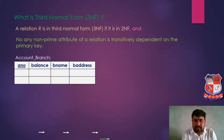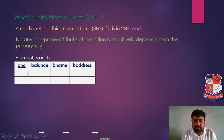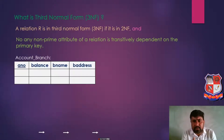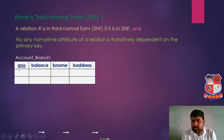हमारे पास suppose एक relation है account_branch, और यहाँ पर चार attributes है: A-Number, Balance, B-Name and B-Address. A-Number के नीचे मैंने underline किया, that means A-Number जो है वो primary key है. Balance, B-Name and B-Address जो है वो non-prime attributes है, क्योंकि यह तीन attributes primary key में नहीं है. तो जो attribute primary key में है उसे prime attribute बोलते हैं, primary key में नहीं है उसे non-prime attribute बोलते हैं. इसलिए यहाँ पर Balance, B-Name and B-Address non-prime attributes है, लेकिन A-Number जो है वो primary key में है — this is the prime attribute.